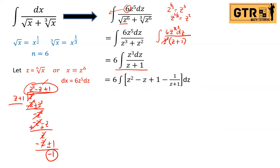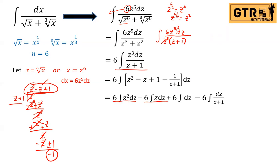So the integral becomes six times the integral of (z squared minus z plus one minus one over (z plus one)) dz. Distributing the six and dz, we can now integrate each term separately.